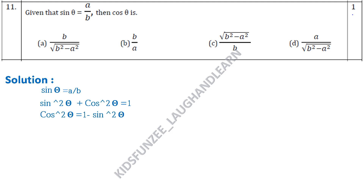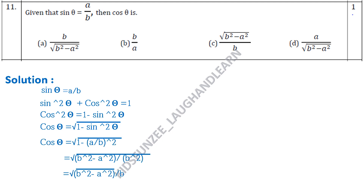So cos²θ = 1 - sin²θ, and cos θ = √(1 - sin²θ). We simply put the value of sin θ = a/b. So cos θ = √(1 - (a/b)²) = √((b² - a²)/b²) = √(b² - a²) / b. So the right answer is option C: √(b² - a²) / b.